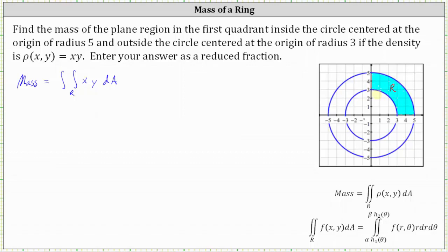To do this, we'll have to write x times y in terms of r and theta. Differential A is equal to r dr d-theta. So this becomes the double integral where x is equal to r cosine theta, y is equal to r sine theta, and dA is equal to r dr d-theta.